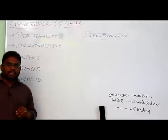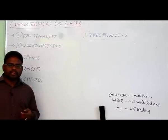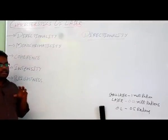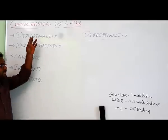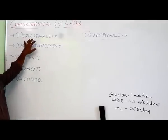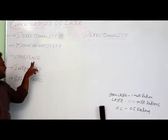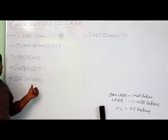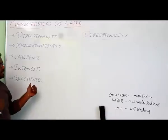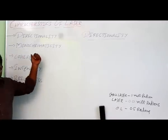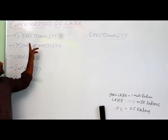When compared with ordinary light and monochromatic light, the laser has different properties. The special characteristics of laser are: directionality, monochromaticity, coherence, intensity, and brightness. We will go through them one by one.